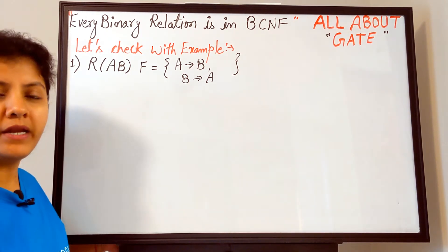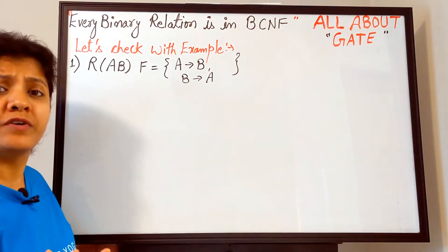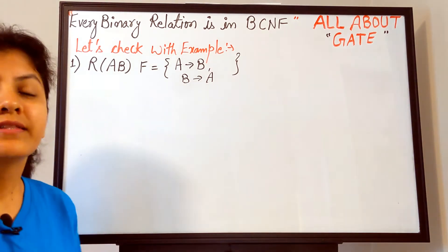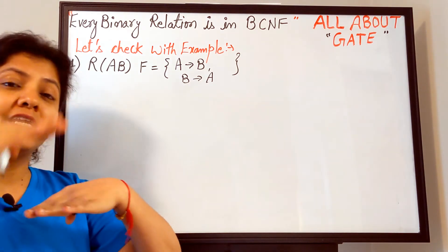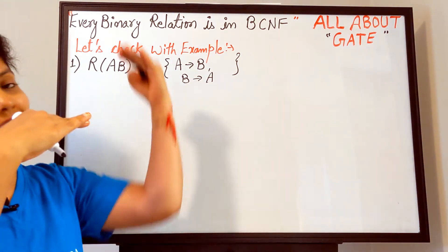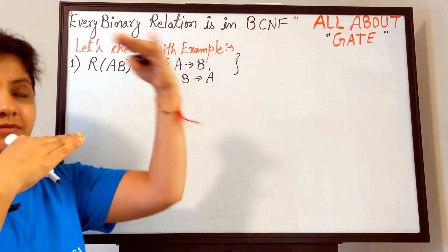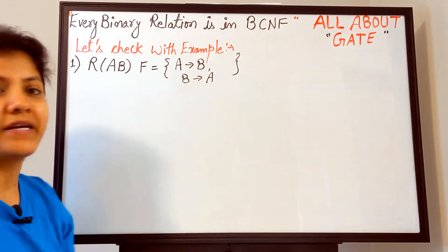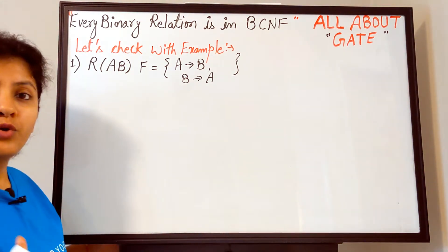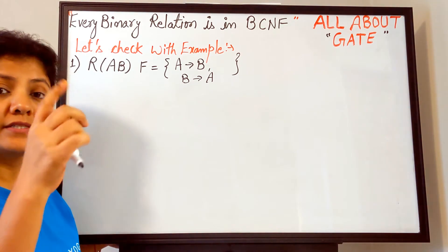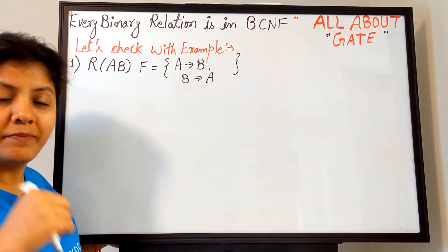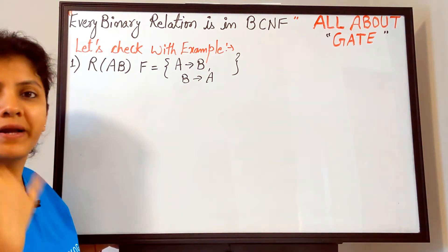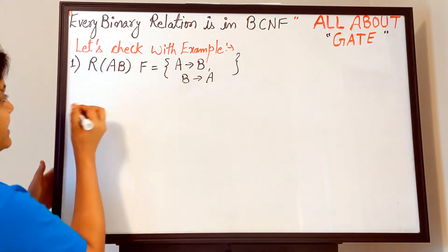Now you must be thinking why are we coming to functional dependency? It's very simple. You all have seen that the basic is functional dependency, which leads to the key, which leads to the normal form. So whatever conclusion you have to come to, you have to start from the root level—that is functional dependency. As we know, the normal form of a particular relation is dependent upon what functional dependencies are present and what is the key. That will only determine the nature of the normal form.